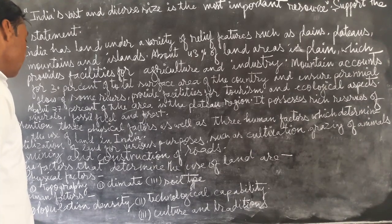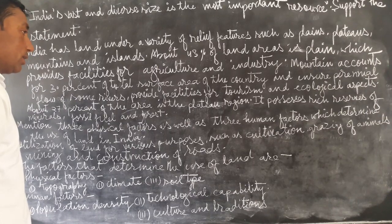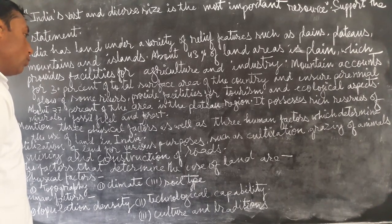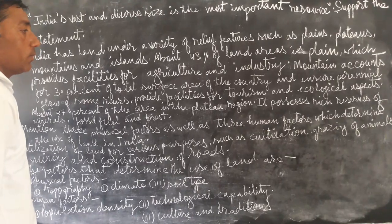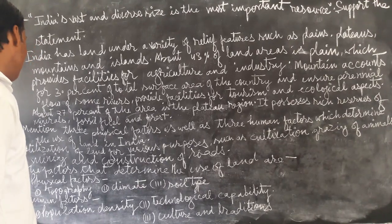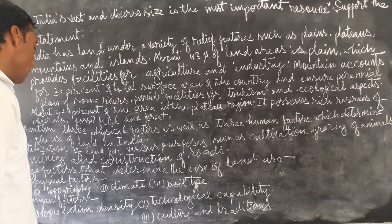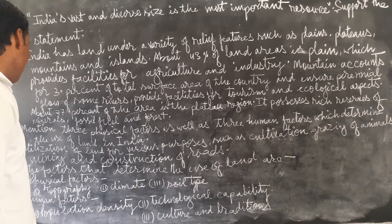There are three physical and human factors which determine the use of land in India.